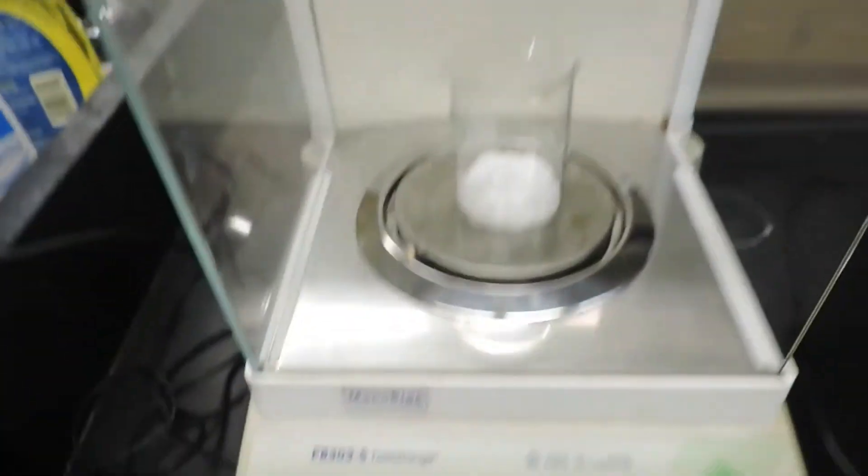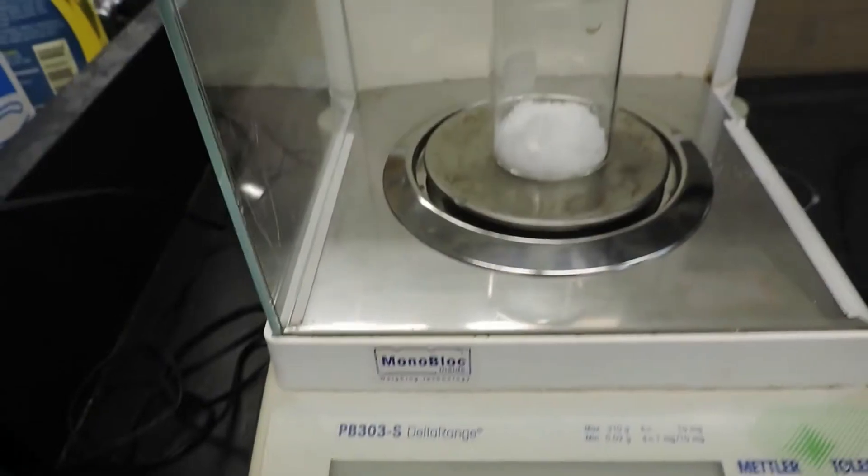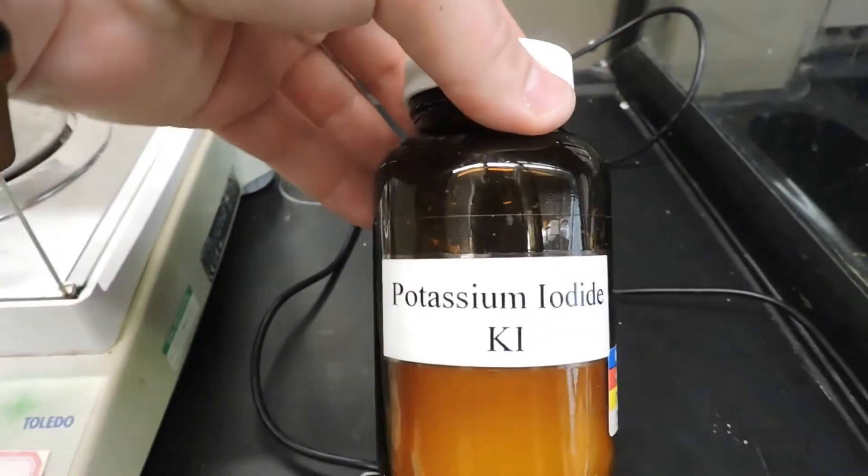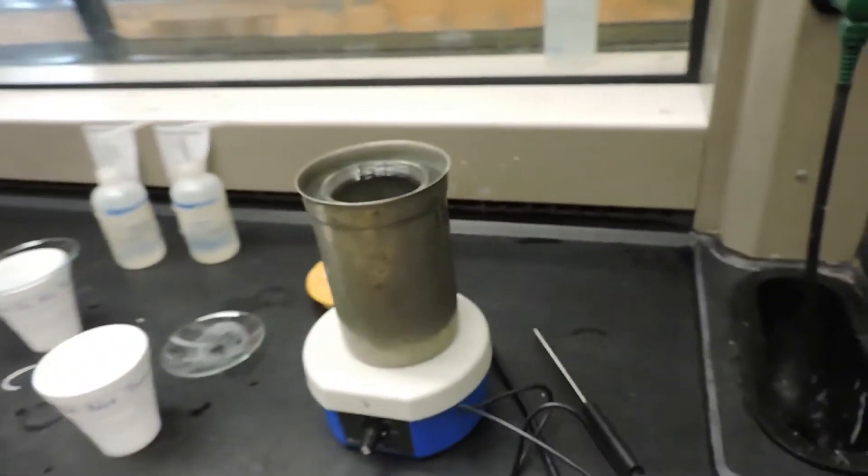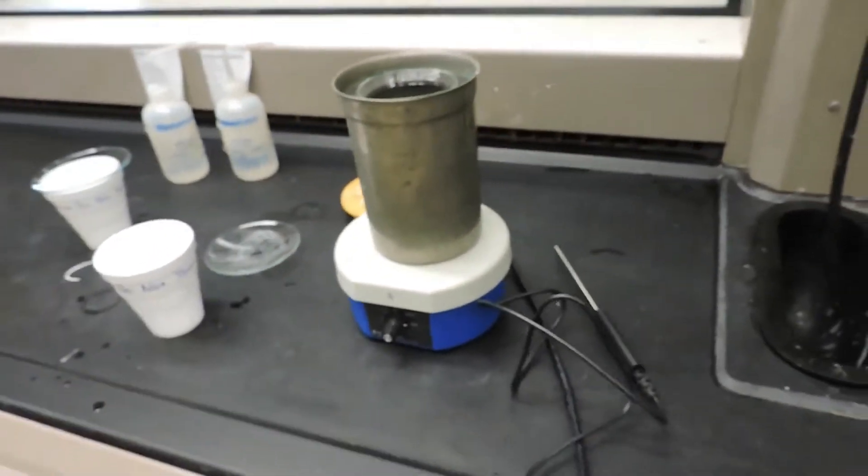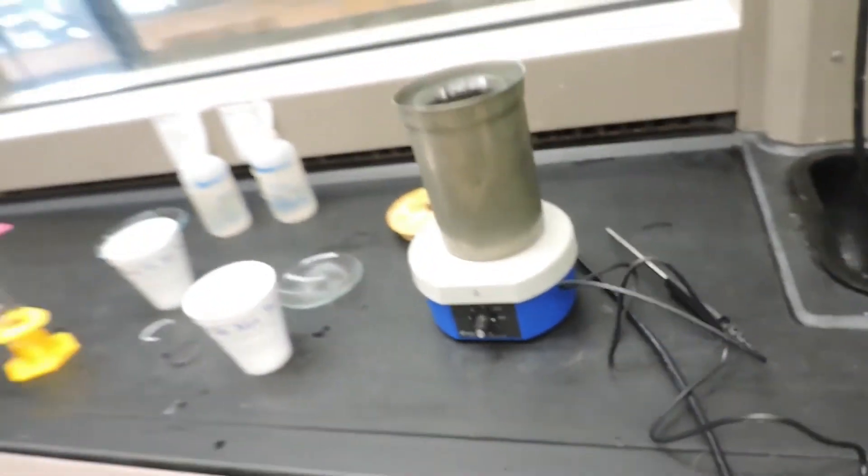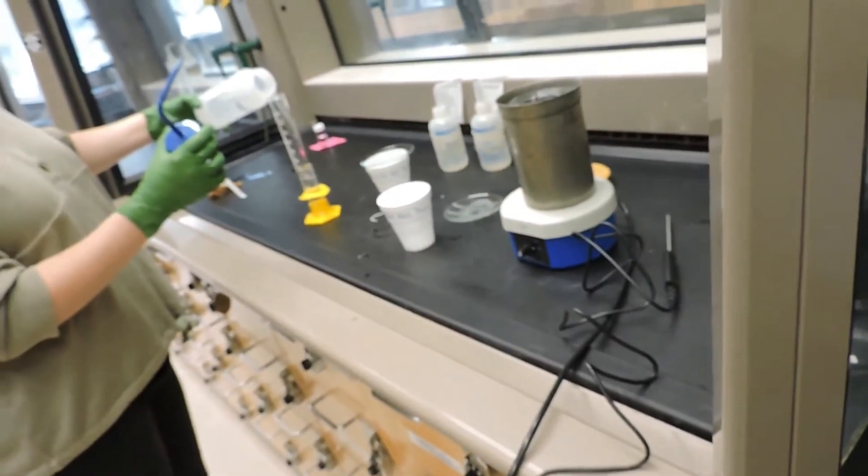And here we have weighed out 16.612 grams of potassium iodide. The calorimeter is set up for this. The calorimeter is clean and dry. And what we'll do is set the stir plate to a medium stir rate, so it's gentle and not too vigorous.